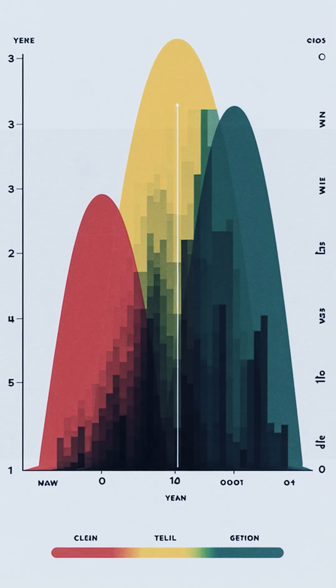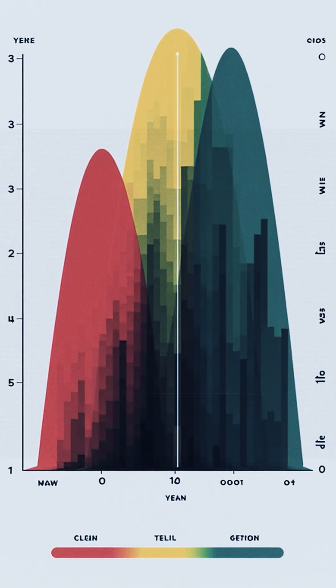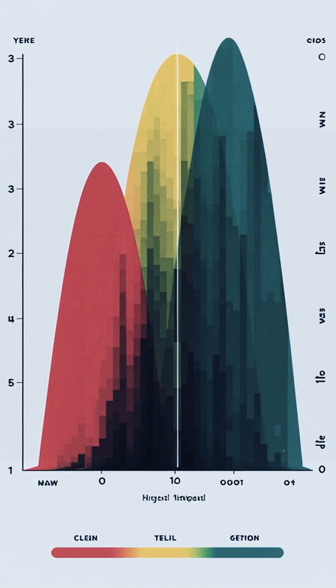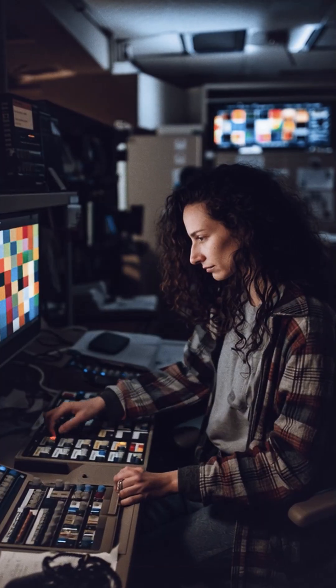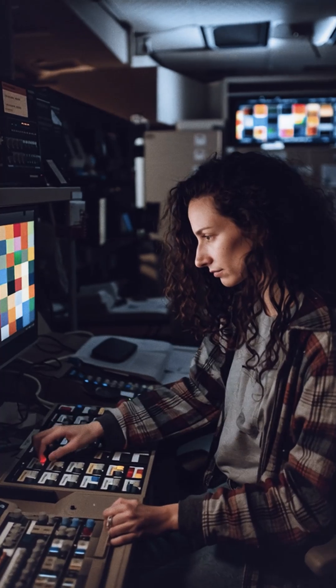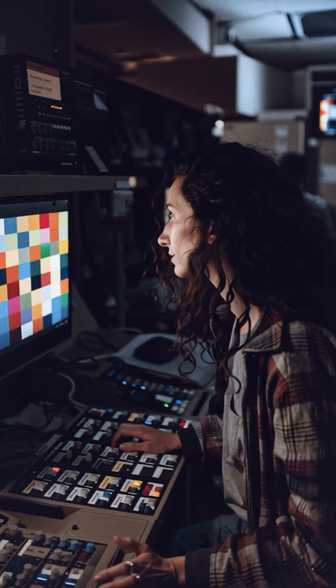When only red cones fire strongly, we see red. When red and green fire together, we see yellow or orange. When green dominates, we see green.